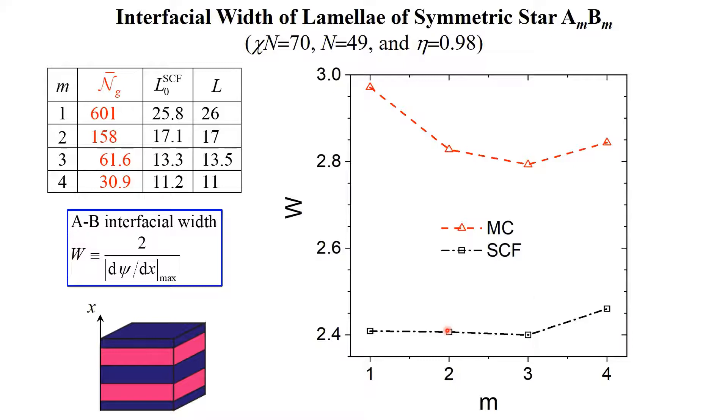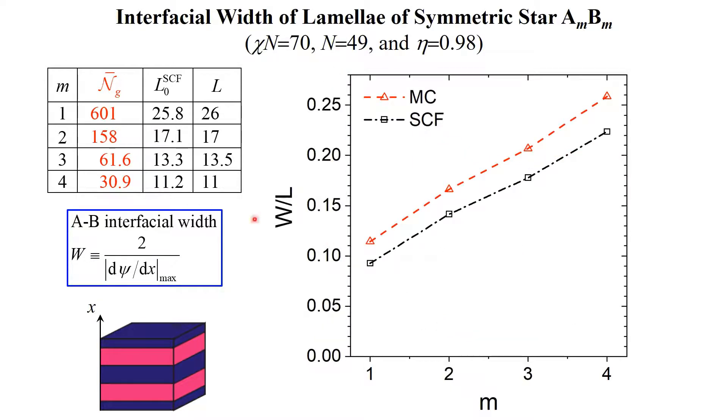In contrast to decreasing n for linear diblock copolymers, where W increases due to the decreasing chi-n, changing the chain architecture from linear to star is therefore a better strategy for nanolithographic applications than just decreasing n. The ratio of W to L of course increases with increasing m due to the increased order-disorder transition of star block copolymers, or say the relative decrease of A-B segregation.